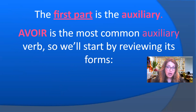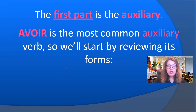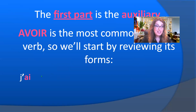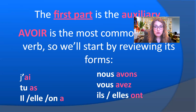Avoir — the verb avoir that we already know — is the most commonly used auxiliary verb. Let's review how it's conjugated: j'ai, tu as, il a, elle a, on a, nous avons, vous avez, ils ont, elles ont.